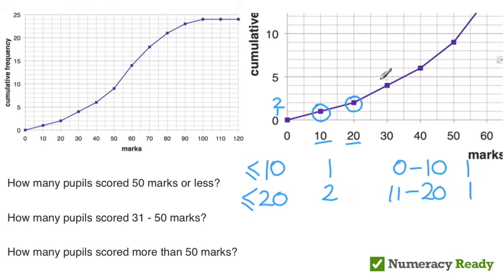Let's do another one just to make sure we've got that. We're looking at 30 marks or less here. So anything between 0 and 30 and the number of pupils was 4.